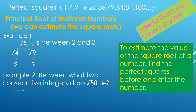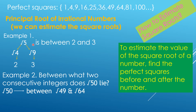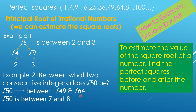Another example: between what two consecutive integers does the square root of 50 lie? The square root of 50 is between the square root of 49 and the square root of 64. The square root of 49 is 7 and the square root of 64 is 8. So that's how you estimate the square root of a non-perfect square.